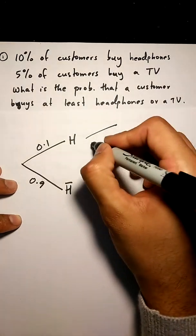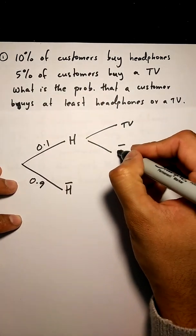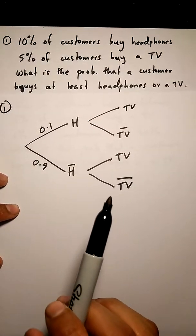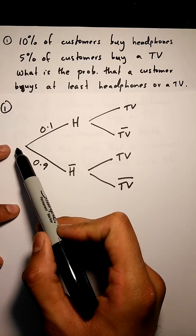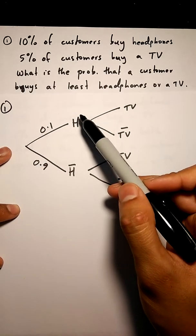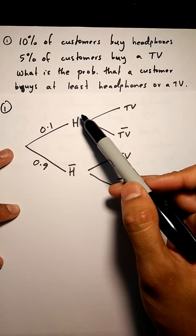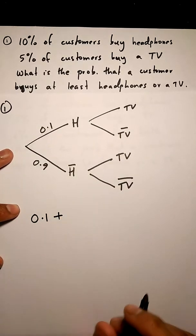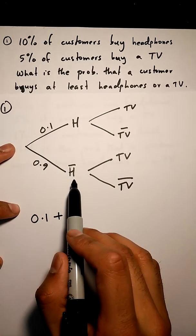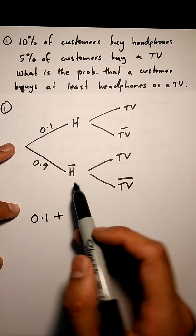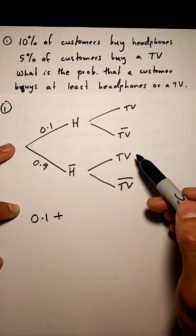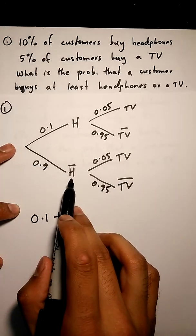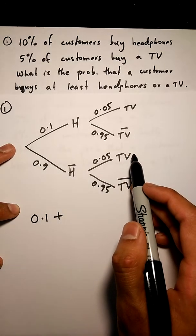The question asks us what's the probability that a customer buys at least headphones or a TV. We start over here, we go up, customers bought headphones, condition is satisfied, so we can write 0.1 plus go down here, don't have headphones, which means we have to buy a TV.